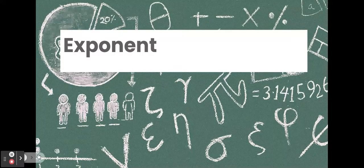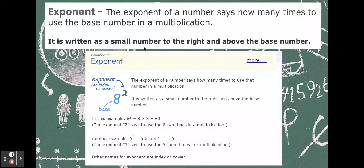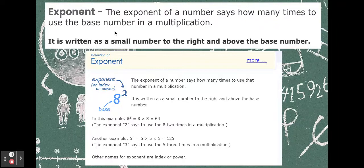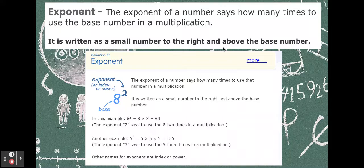Exponent. We've looked at that a couple of times. Let's look at it again. The exponent of a number says how many times to use the base number in a multiplication. Again, it's written as a small number to the right and above the base number. Again, it's also known as the power. And we can see here it's also known as the index, but we're not going to go into that. Just the power or the exponent. We can see that.